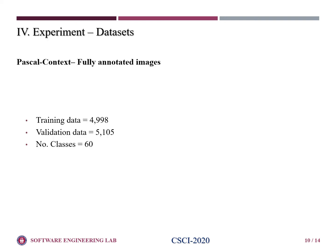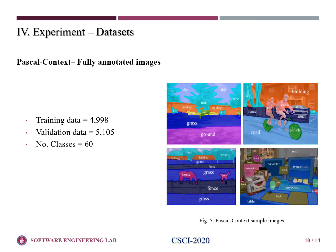We use the PASCAL context dataset in order to evaluate the effectiveness of our proposed method. PASCAL context dataset contains fully annotated images. It contains around 5000 training data, 5000 validation data, and the total number of classes is 60. Here is an example of the PASCAL context dataset.